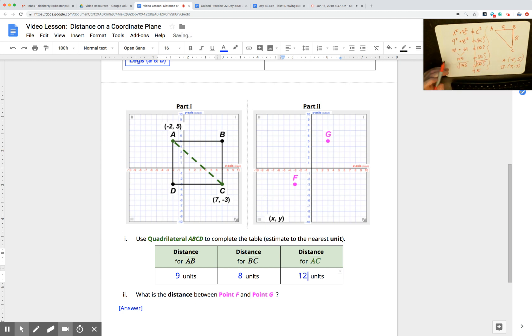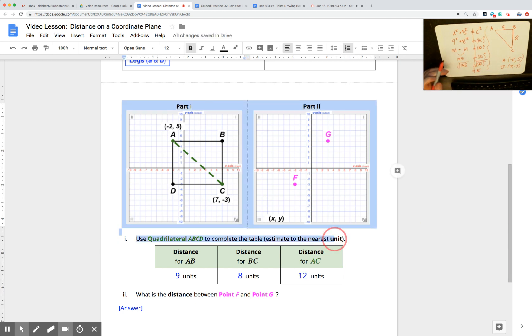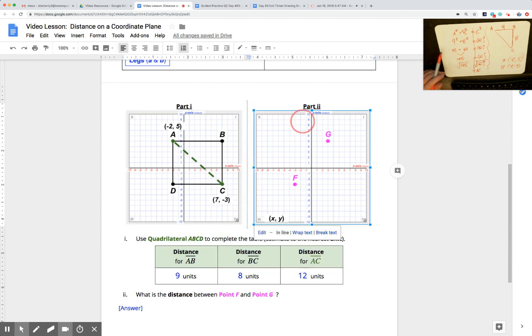I'm going to round to the nearest unit today, and because it's to the nearest unit for problem number one or Part 1, I'm going to just put 12 instead of 12.1 or whatever square root of 145 may be. Pause this video, take a look at Part 2 now where it's a bit more challenging.